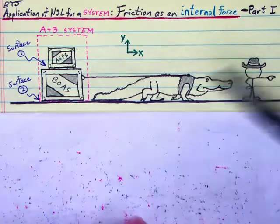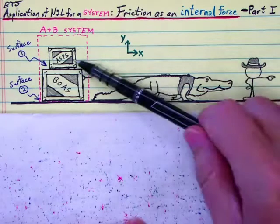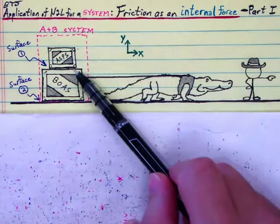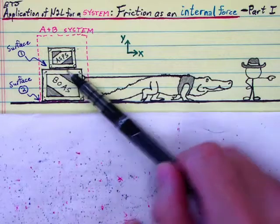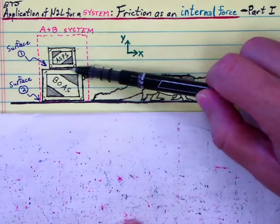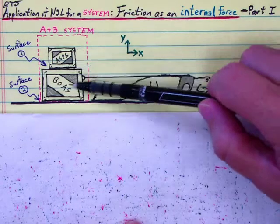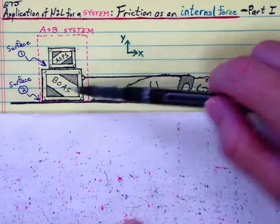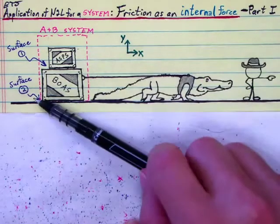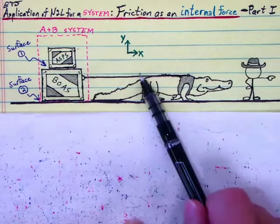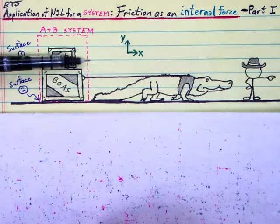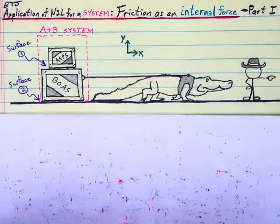Here we have one moving object stacked on top of another with the possibility for friction in between the two. Let's call this surface of contact between crates A and B surface 1, and this surface between crate B and the ground surface 2. Suppose B is being pulled to the right by this rope, then the two crates could be moving, possibly accelerating to the right — and there's a lot we could learn from this scenario.